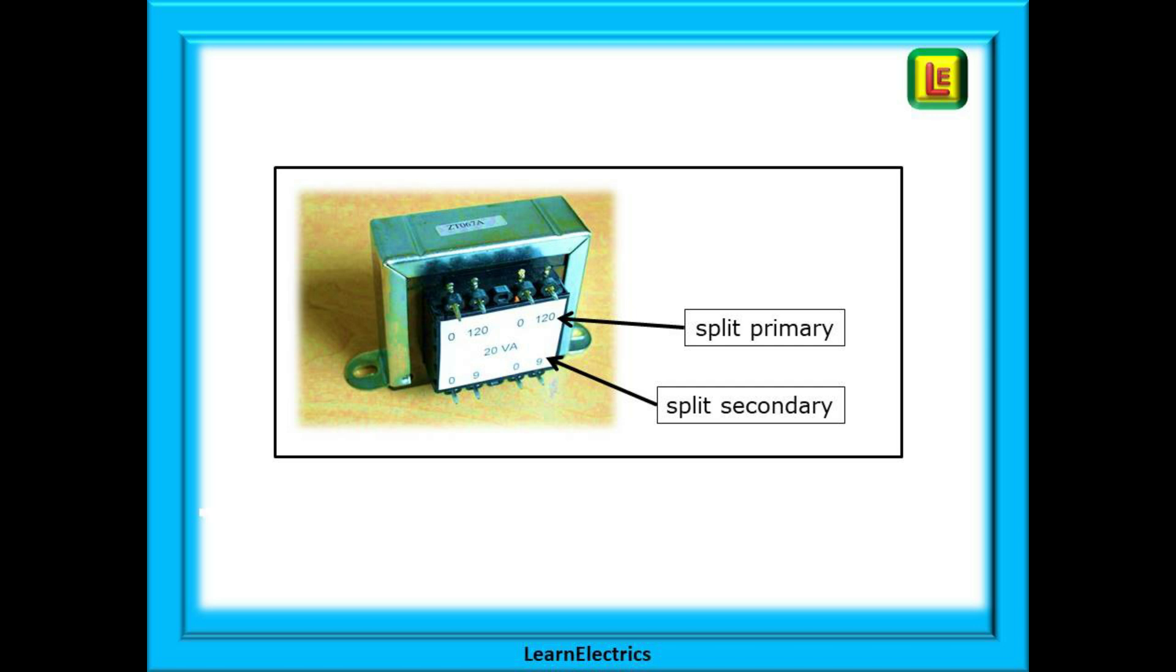It has two 120 volt primary windings that can be joined to make one 240 volt primary and it has two 9 volt secondary windings that can supply two 9 volt circuits or be joined to make one 18 volt supply.